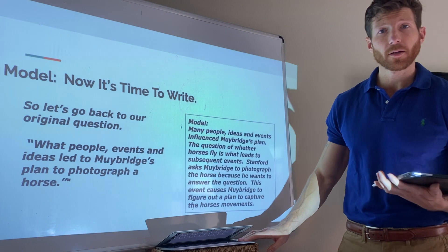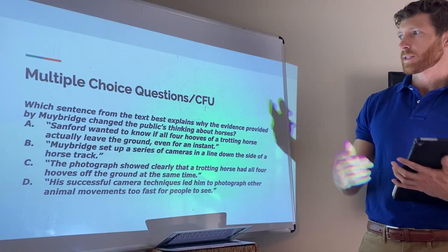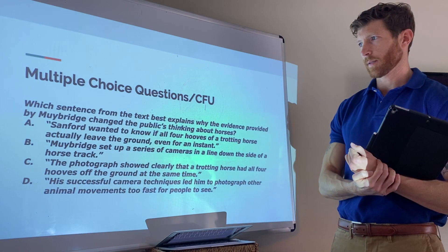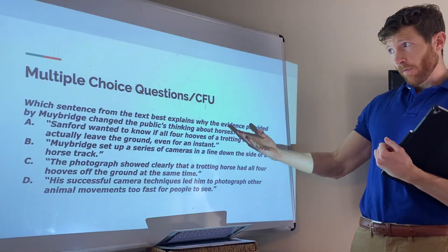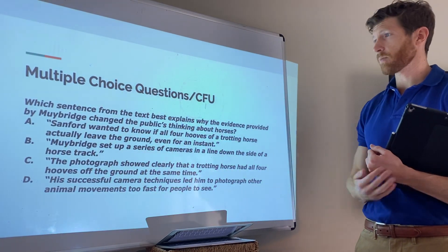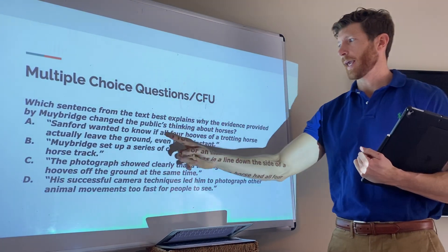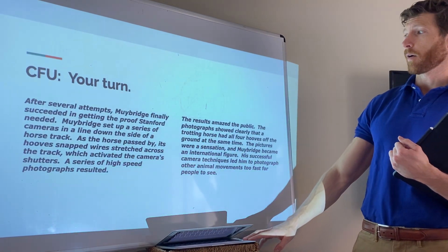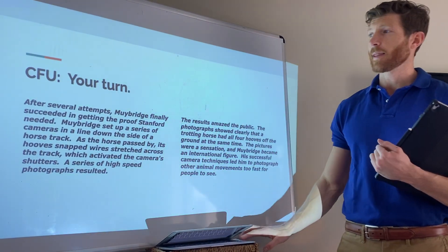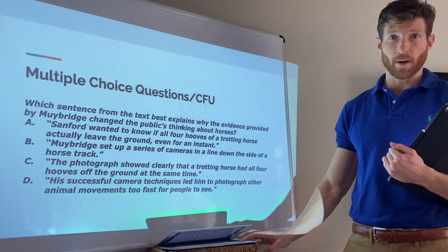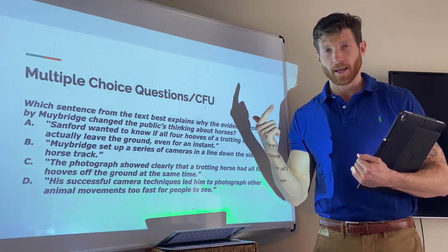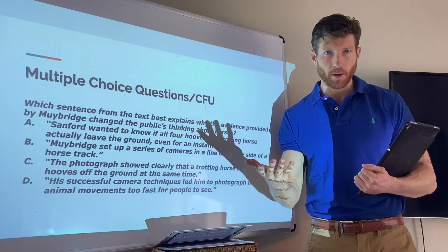Now let's do a quick check for understanding. Which sentence from the text best explains why the evidence provided by Muybridge changed the public's thinking about horses? I've got four pieces of direct evidence from the text, and I have to figure out which one explains why Muybridge's evidence changed the public's thinking about horses. What I want you to do is independently read the next two paragraphs from the text, then answer this CFU question. Pause the video right now, read the two paragraphs, answer the question, and when you're done, unpause — I'm going to go over the answer.